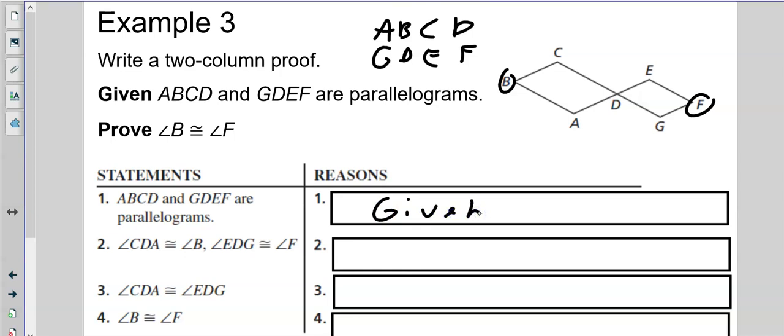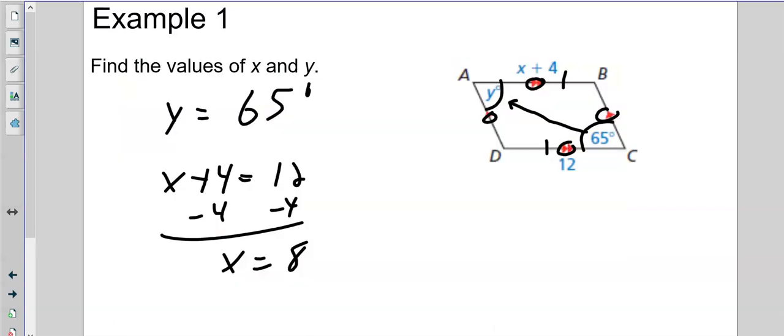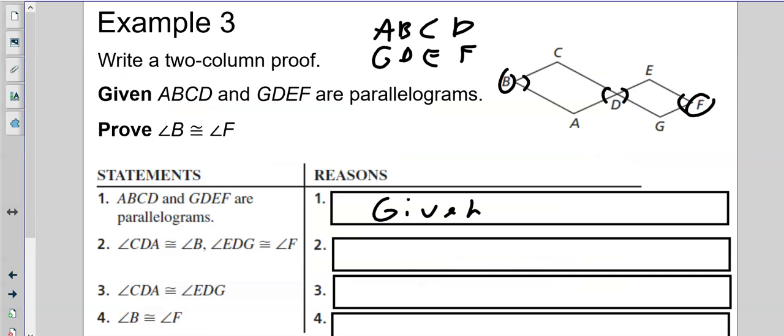Now, we know that angle CDA, right here, is congruent to B. And that angle EDG, which is right here, is congruent to F. Well, that's one of the new things we just learned. So, we're just going to say we know that that is because opposite angles of a parallelogram are congruent. So, I use a parallel symbol and an O-gram. Parallelogram are congruent. Very simple way to abbreviate this.